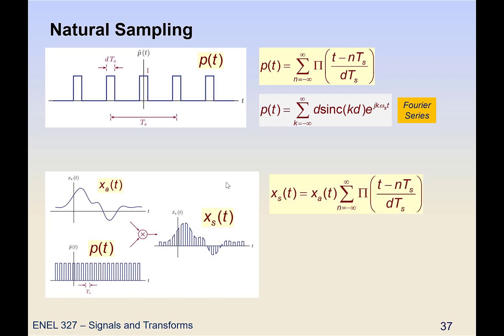Okay, so what does this sampled signal look like? Well, it's just x of t multiplied by its pulse train. But we could just use this Fourier series instead and say that the sampled signal looks like this. Again, this is no longer periodic, so we have to look to the Fourier transform to understand what the spectrum looks like.